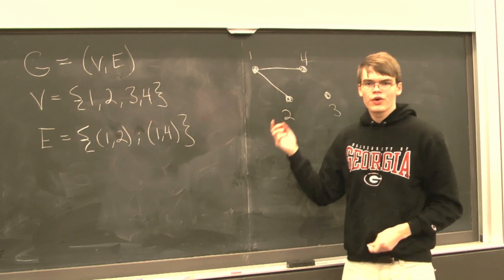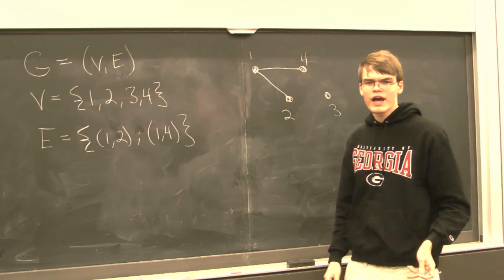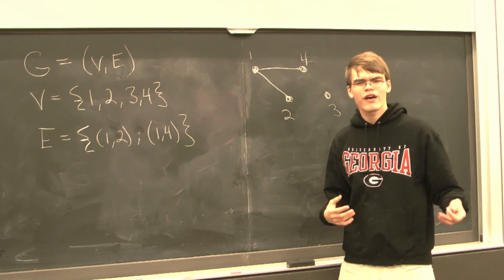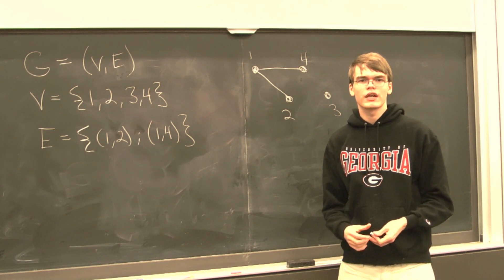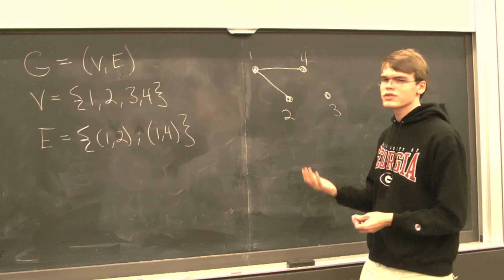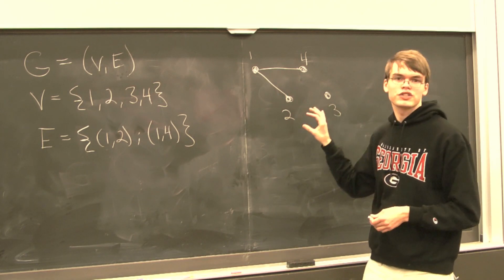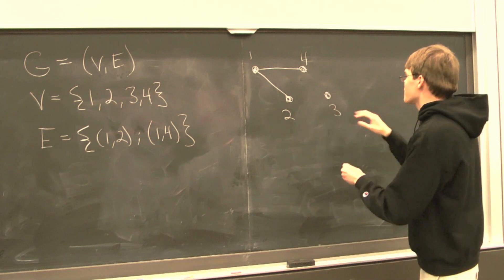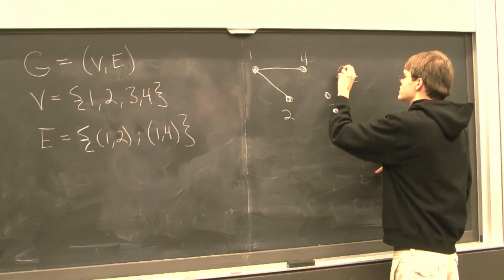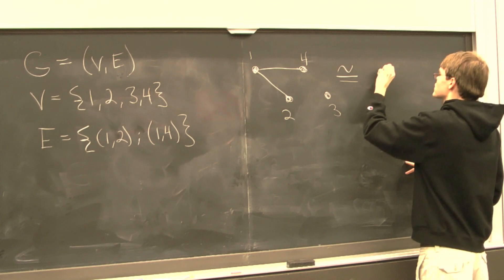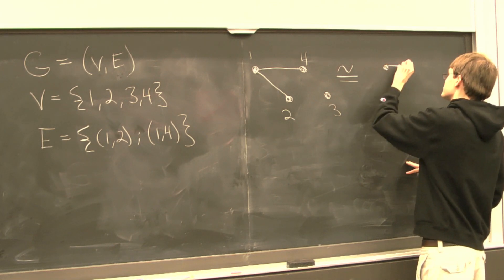Now it's important to note that these vertices don't have any Cartesian coordinates associated with them, and it doesn't really matter how they're arranged in our plane. So for example, this graph can be thought of as the same as maybe this graph.